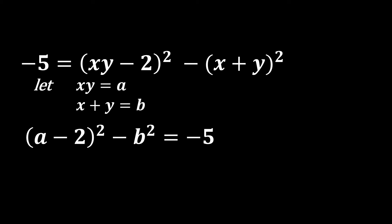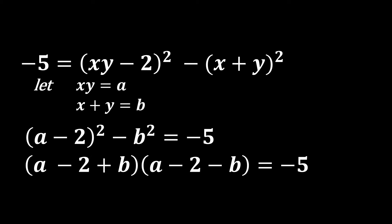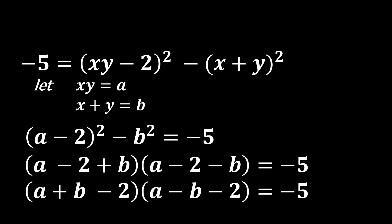We apply the p² - q² formula: (p + q)(p - q). Applying this gives us: (a + b - 2)(a - b - 2) = -5.